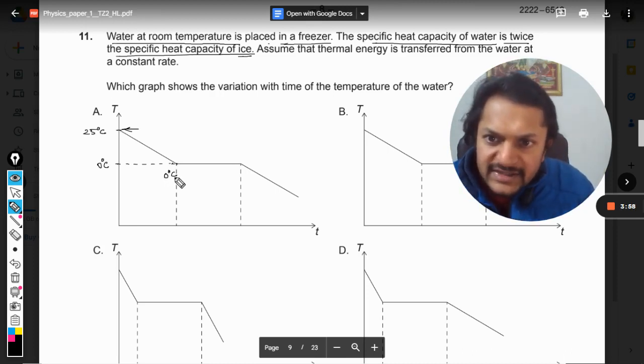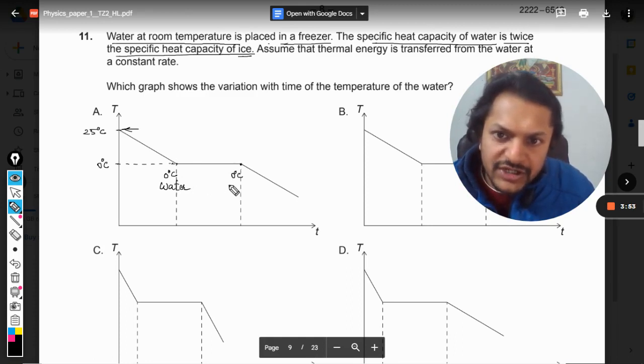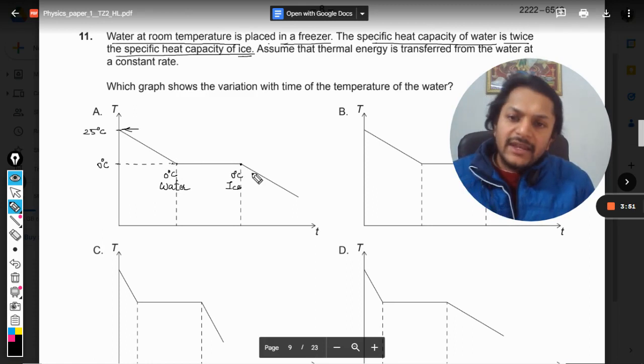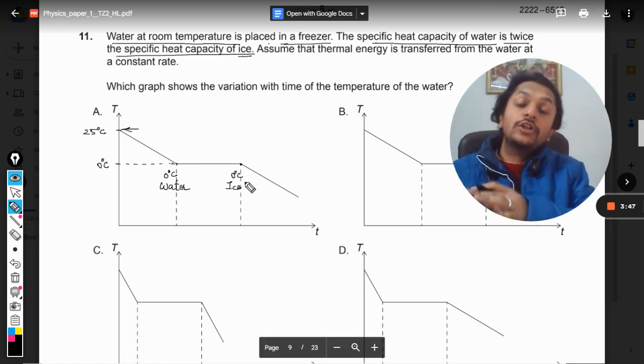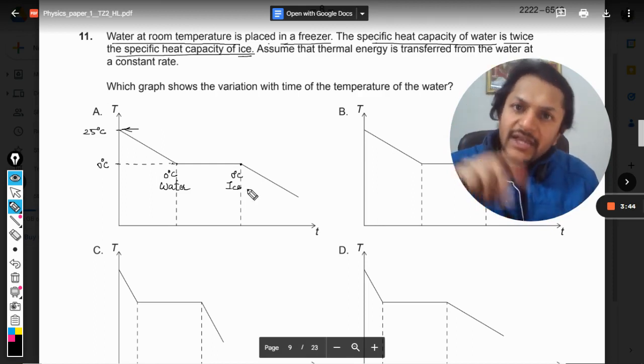At this point it is zero degrees C water, and at this point it is zero degrees C ice. Now the temperature is further reducing because all of the water has been converted into ice now.